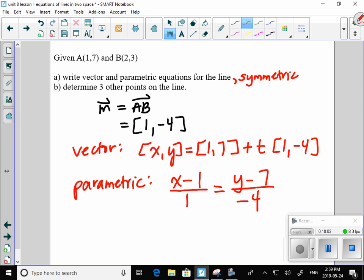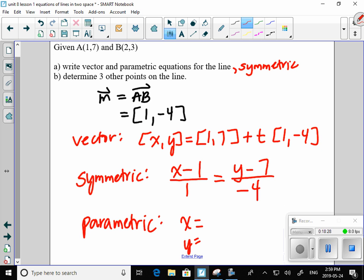I had parametric in my head and then promptly went and did symmetric. It's easier to fix for me. Sorry. Parametric. X equals. Y equals. So, three forms of the very same line. In fact, I am just choosing the same numbers. So, x equals 1 plus t times 1. Y is 7 plus the scalar multiple of the negative 4.